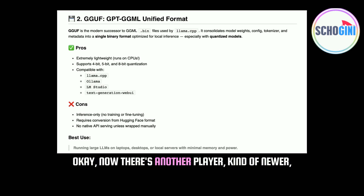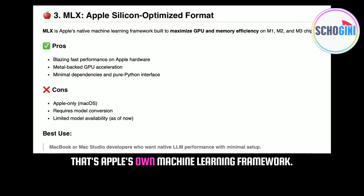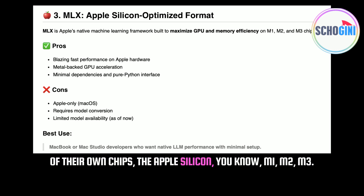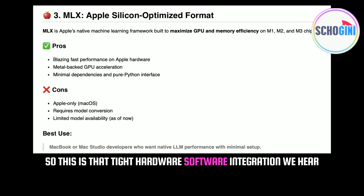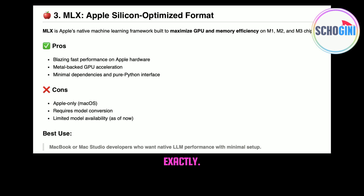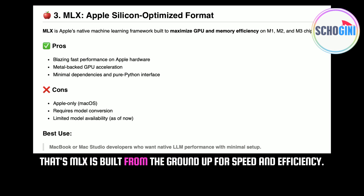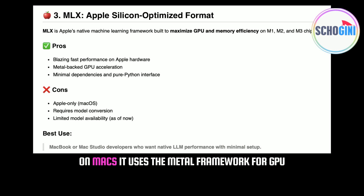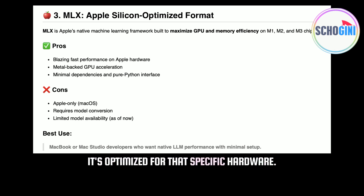Now there's another player, kind of newer, getting buzz especially for Apple users: MLX. That's Apple's own machine learning framework. It's specifically designed to really take advantage of their own chips — Apple Silicon — M1, M2, M3. MLX is built from the ground up for speed and efficiency on Macs. It uses the Metal framework for GPU acceleration and leverages the unified memory — it's optimized for that specific hardware.